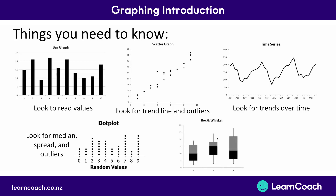Finally, we looked at a box and whisker plot. You have to compare the medians — the middle line. If you're looking to get merit and excellence, you'll need to discuss the spread of the data: how spread out is each box? The more spread out it is, the more variation there is in your data. Always compare the medians, not any other points on this graph.